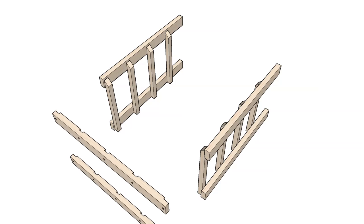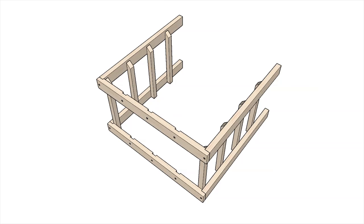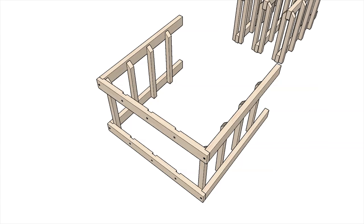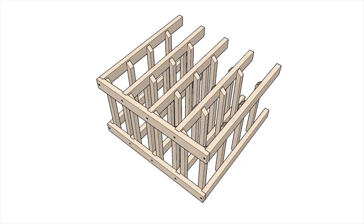Secure two connectors to the bottom of each side ladder using the provided wood screws. Next, insert the middle ladders and attach them to the connectors. Make sure the bottle supports are all facing the same direction.